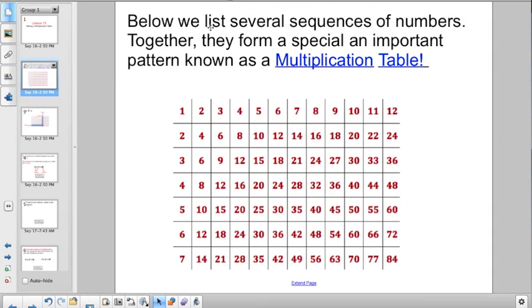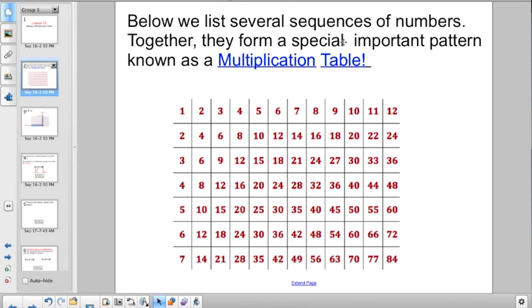So it says below we list several sequences of numbers. Here I'm just counting up by ones, here I'm counting up by twos, counting up by threes, counting up by fours, and so on. Together they form a special important pattern known as a multiplication table.